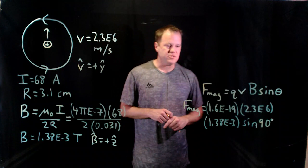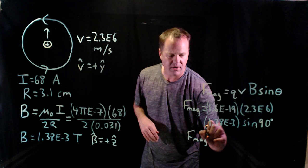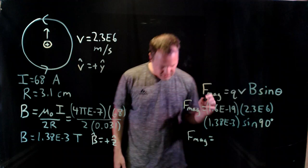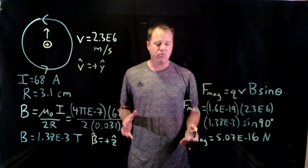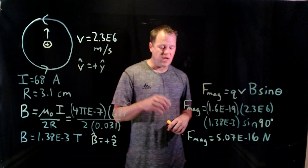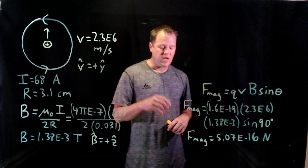I throw those numbers into a calculator. And I'll get SI units of newtons. And I get an answer of 5.07 times 10 to the minus 16 newtons. Now, of course, that sounds like a tiny force. And it is for a macroscopic object. But it actually wouldn't be for a microscopic object like a proton. And I'll show that in a second.